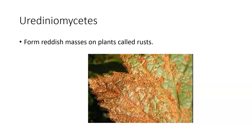From there, we're going to switch gears and start talking about some of our fungus-like protists. Urediniomycetes form rusts — they're called that because they're little fungus-like things that grow on a leaf and make the leaf look rusty, as shown in this picture. This rust is damaging the plant.